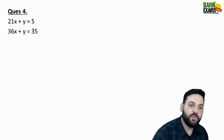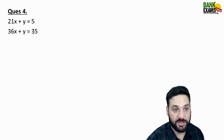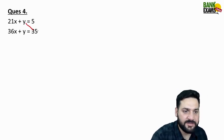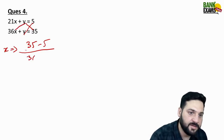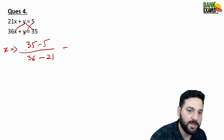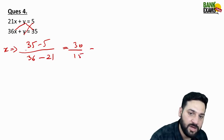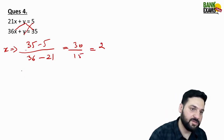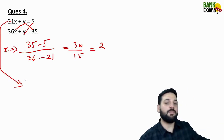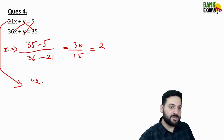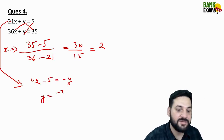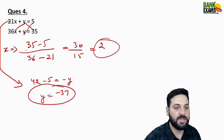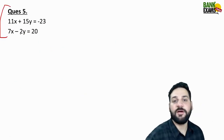For question 4: 21x + y = 5 and 36x + y = 35. The numerator is simply 35 - 5 = 30, and the denominator is 36 - 21 = 15. So x = 30/15 = 2. Substituting x = 2: 21 × 2 = 42, then 42 - 5 = 37, so y = -37. The value of x is 2 and y is -37. Very simple technique.